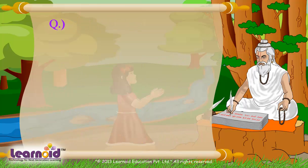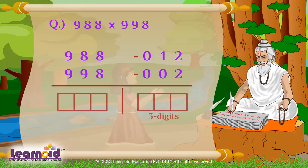Now let's multiply 988 and 998. Let's write deficiencies: minus 012 and minus 002. Now cross subtract the easier one, so we will do 988 minus 002.